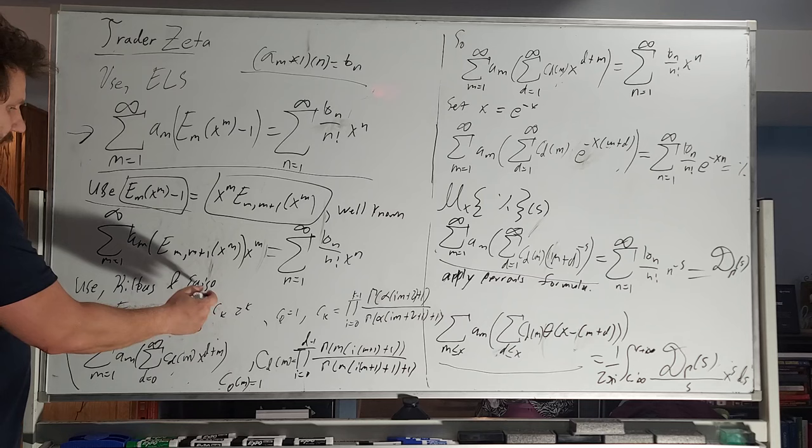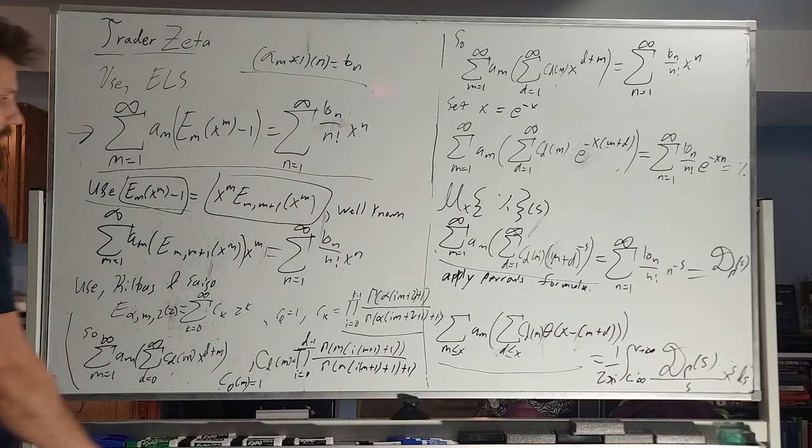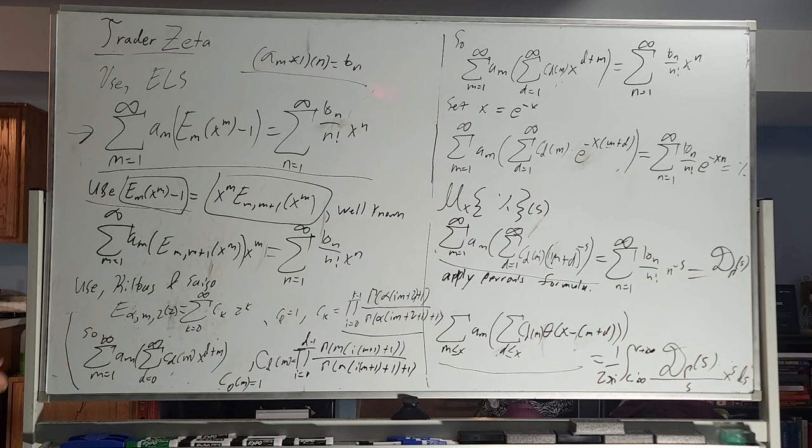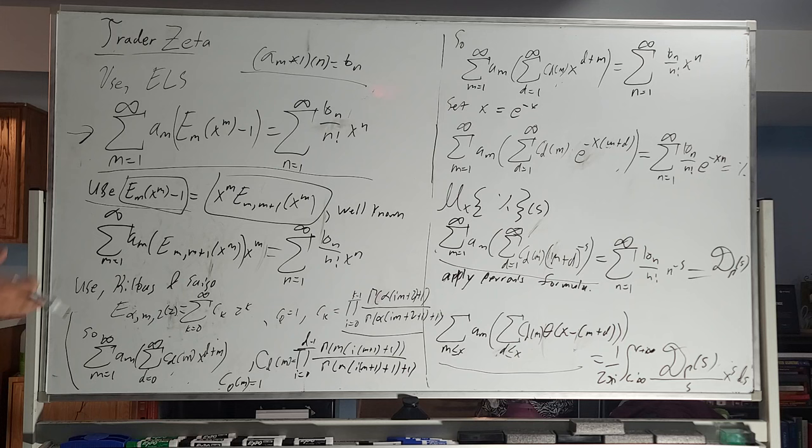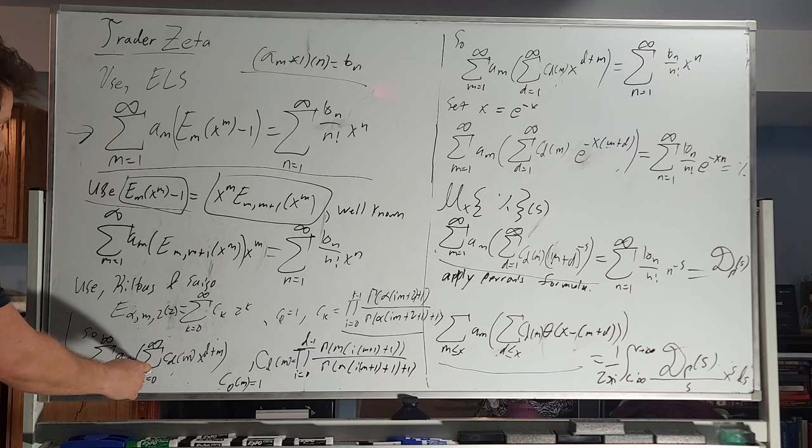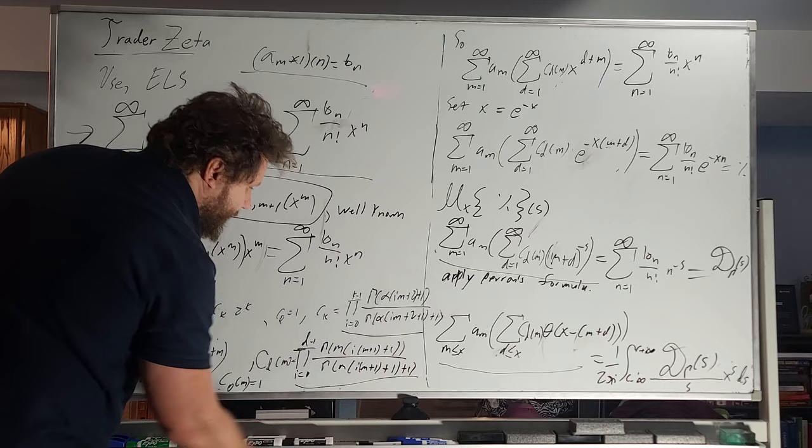And we have sum k equals 1 to infinity, c sub k, z to the k. And c sub 0 is equal to 1, and c sub k is our products with the gamma functions and stuff like that. It's very nice. Okay, so what we can do is we can kind of compactify things. So we're going to take this right here, and we're going to use this definition. And when we do that, I'm just going to save you the headache. We get sum m equals 1 to infinity, a sub m, sum d equals 0 to infinity, c d of m, x to the d m, d plus m, where c sub 0 of m equals 1, and c d of m is our product of gammas.